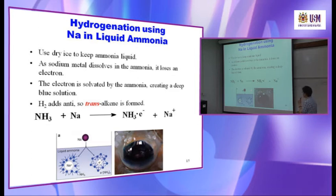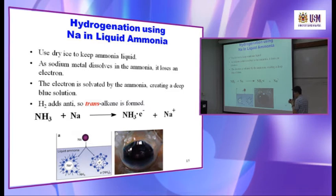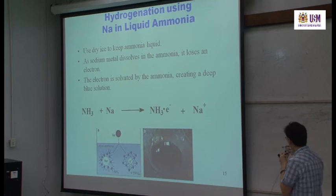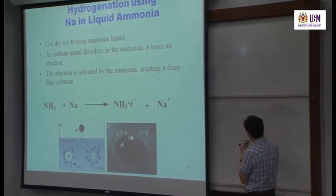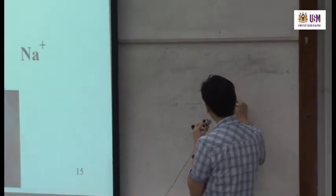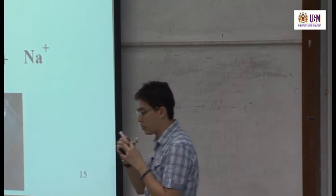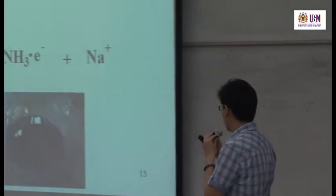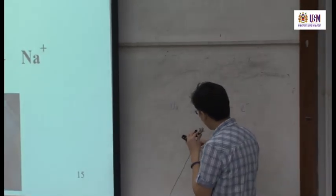When sodium metal is dissolved in ammonia, what we call solvation occurs — the electron is solvated by the ammonia, creating a deep blue solution. The sodium releases one electron: sodium metal gives Na⁺ plus e⁻. The sodium ion, being positively charged, is surrounded by ammonia's lone pairs, while the electron — negatively charged — is surrounded by the hydrogen atoms of ammonia. This is solvation.